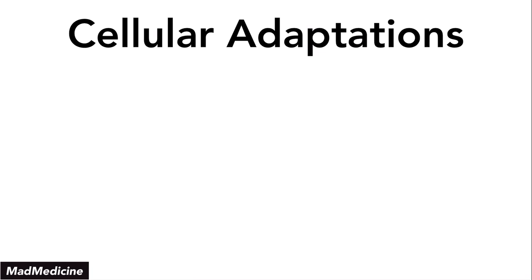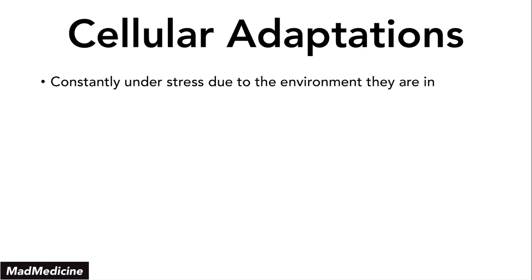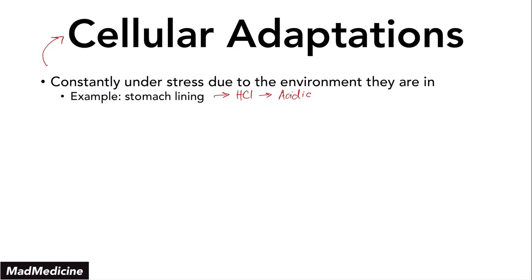One thing you've got to remember is that our cells are constantly under a lot of stress because of the environment that they are in. The most basic example I have for this is your stomach lining. Your stomach lining is constantly being exposed to hydrochloric acid, which is a very acidic environment. Therefore, our cells in that environment have developed cellular adaptations in order to survive and thrive so that our stomach acid doesn't corrode through our stomach and go into our abdomen.